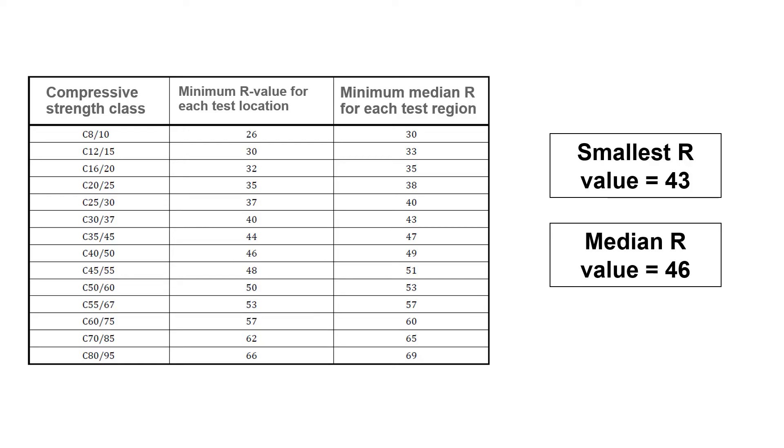Now we can use these test results with the lookup table provided in the standard. The smallest R value, the median for the test region, and that gives us the compressive strength class.